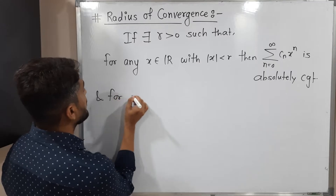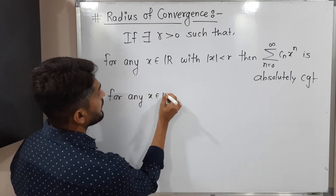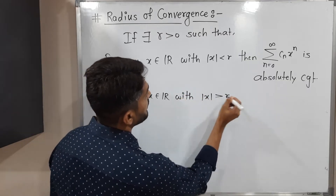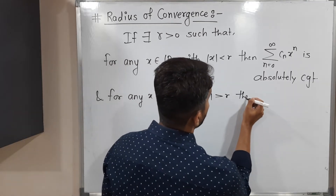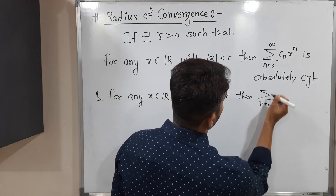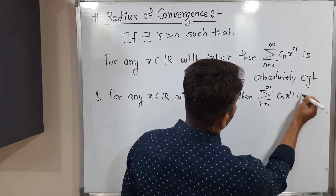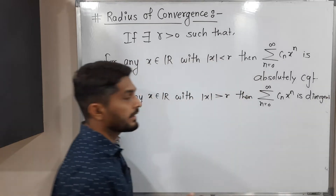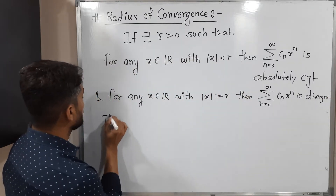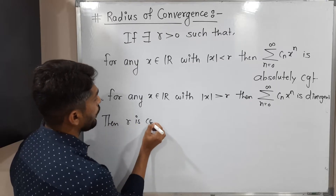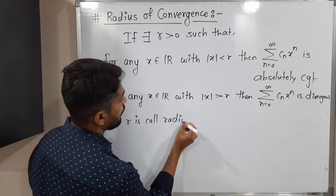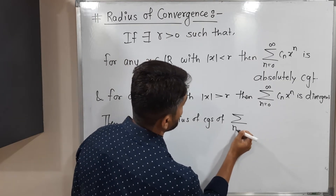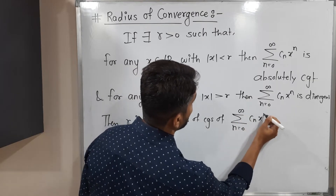And for any x belonging to the reals, again we can take any x which is a real number with the condition |x| greater than r, then the series n running from 0 to infinity of c_n x raised to n is divergent. Then we say r is the radius of convergence of the power series summation n running from 0 to infinity of c_n x raised to n.